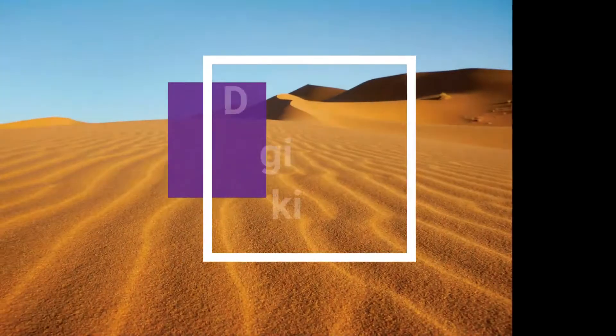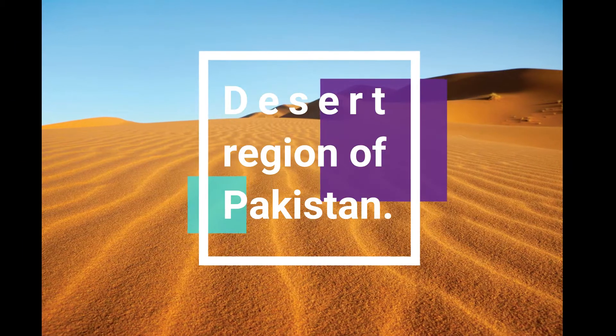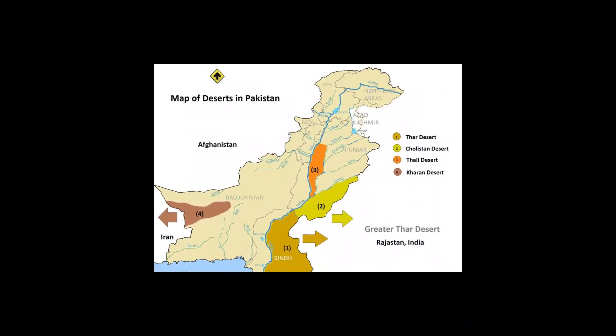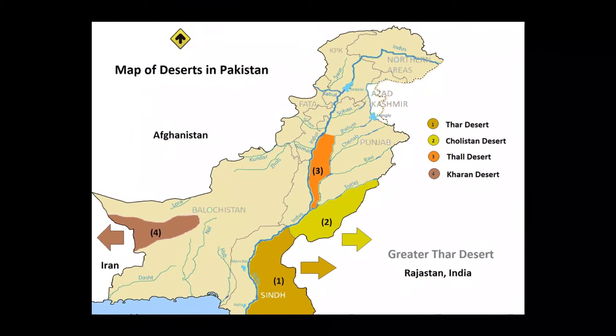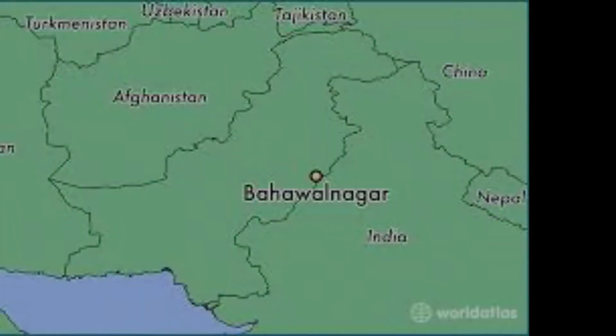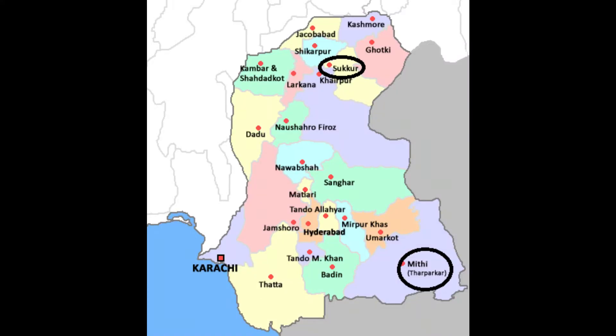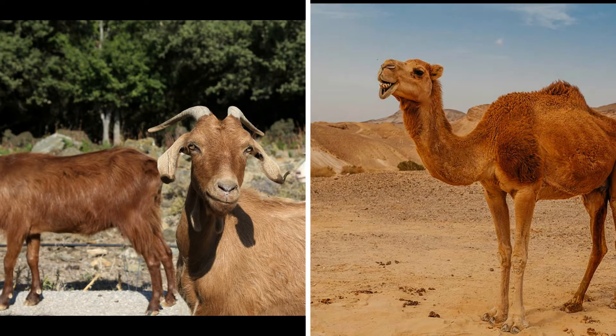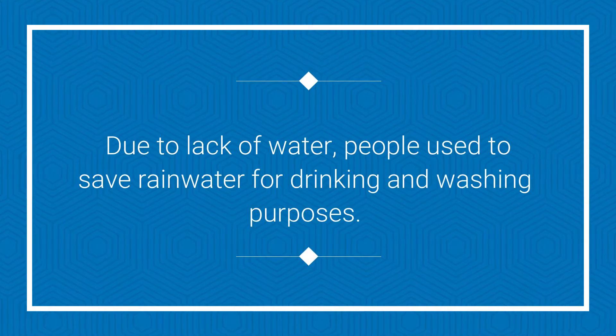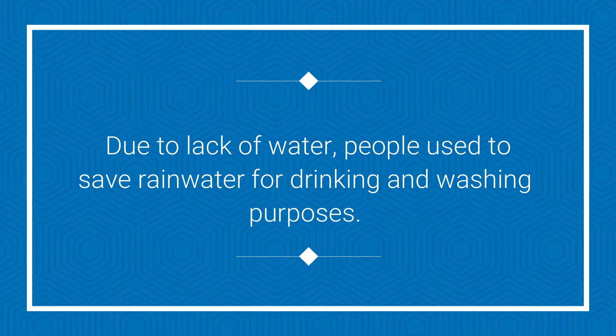Ab am aate hain the desert region of Pakistan. The desert region in Pakistan is located in the south east in Punjab. It expands from Bahawalnagar to Bahawalpur, and in Sindh it consists of Sukkur and Tharparkar. People used to nourish goats and camels over here, and due to the lack of water in this area people used to store rain water for drinking and washing purposes.